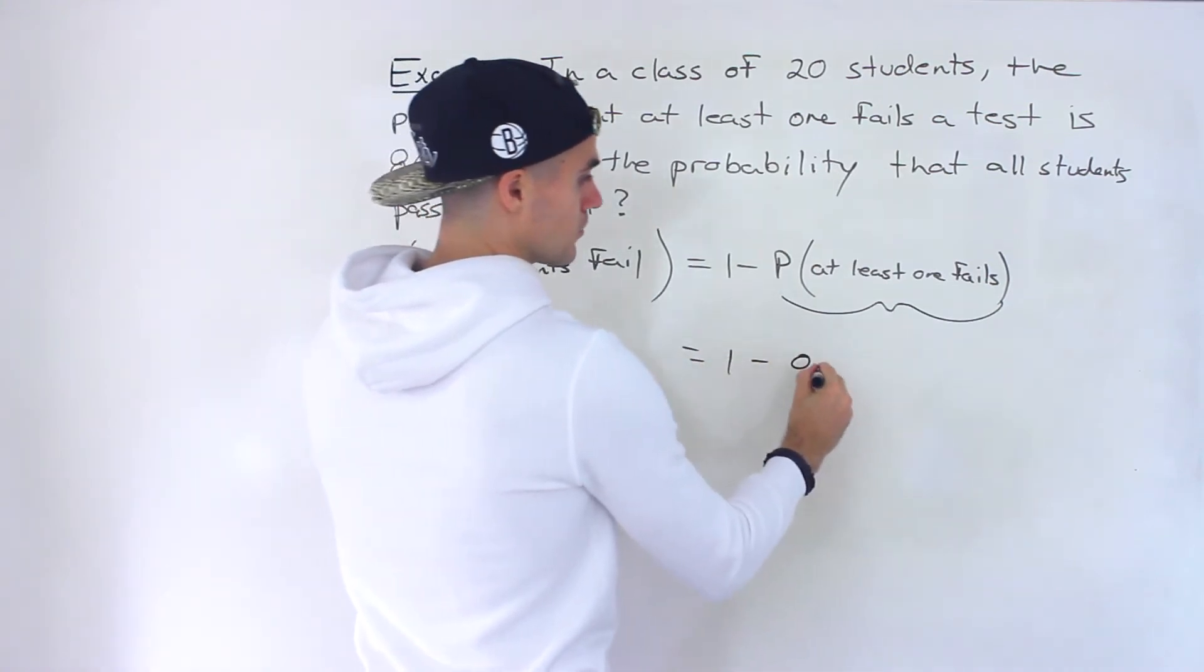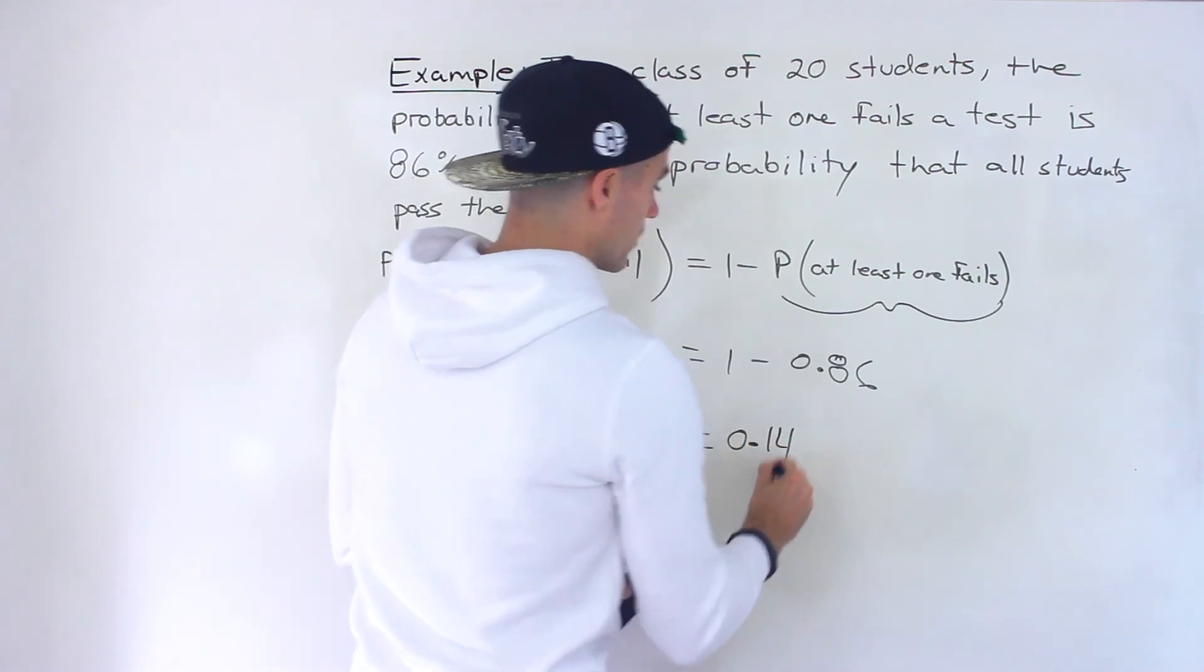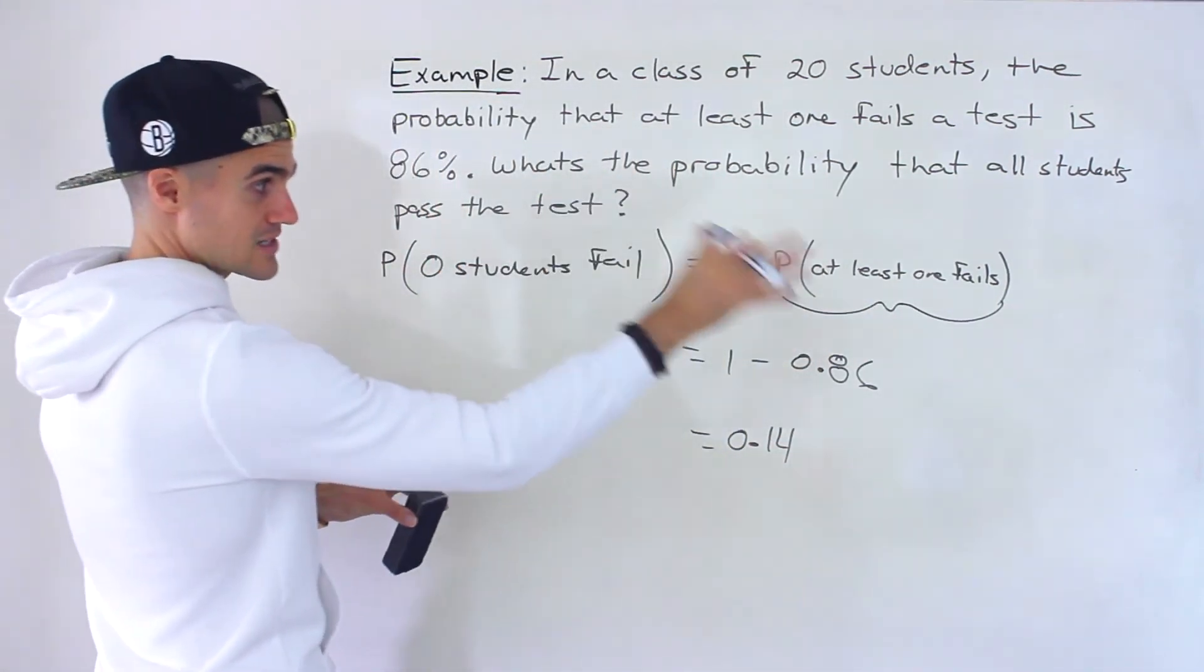And so we could just do one minus 0.86, which would give us 0.14 for the other side of that, at least one failing.